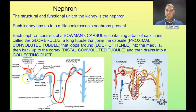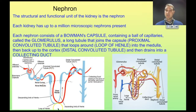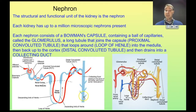From the Bowman's capsule, we have the proximal convoluted tubule — proximal means near, convoluted means wandering all over the place, and tubule because it's a small tube. It then goes around the loop of Henle, which has a descending limb going down and an ascending limb going up. Then there's the distal convoluted tubule — distal means far away. Finally, the collecting duct drains what's left over, which is the urine. This goes to the pelvis of the kidney and drains through the ureter to the bladder.